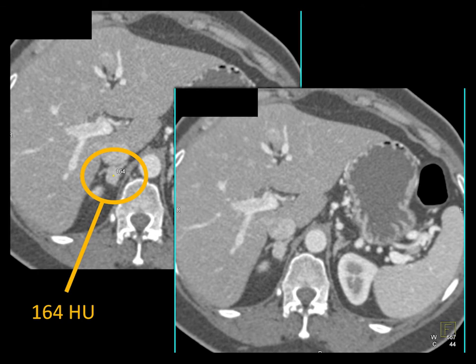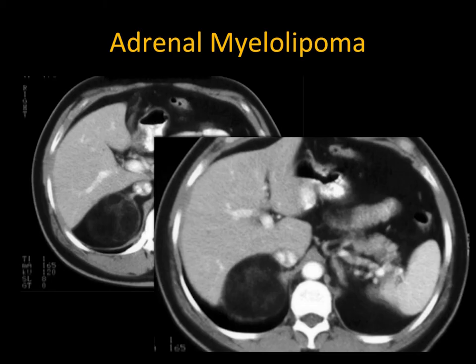It used to be said there are no incidental pheos and that patients all have hypertension — but we now pick up more incidental pheos than pheos we look for in hypertensive patients. We also see fatty adrenal lesions — myelolipomas. The challenge with myelolipomas is not malignancy, but that over 5cm they can spontaneously bleed. Many are under 5cm and are leave-alone lesions.